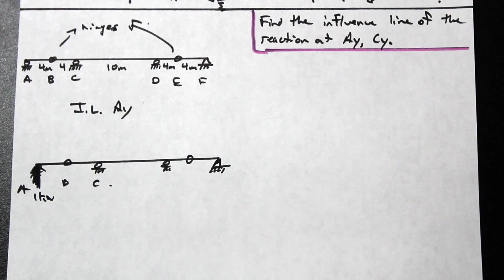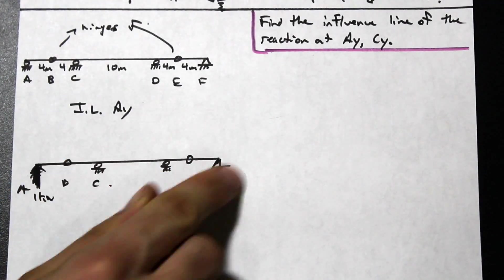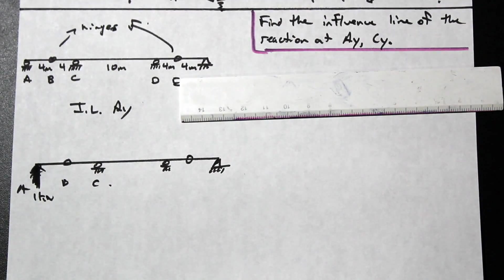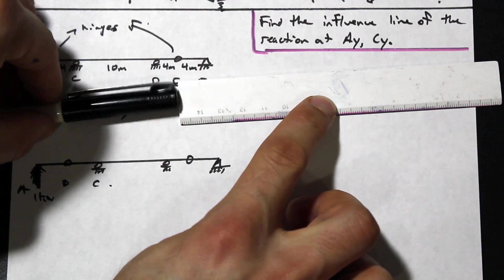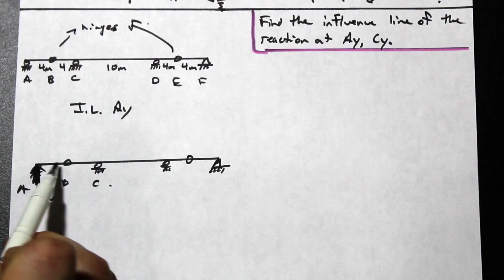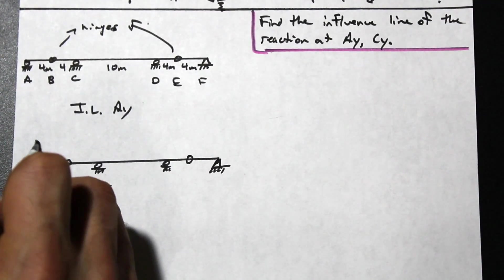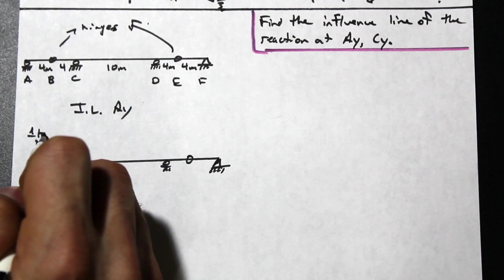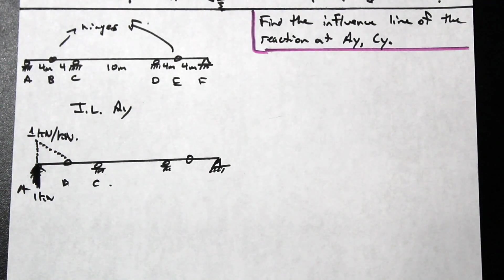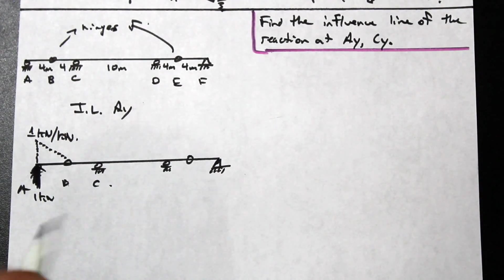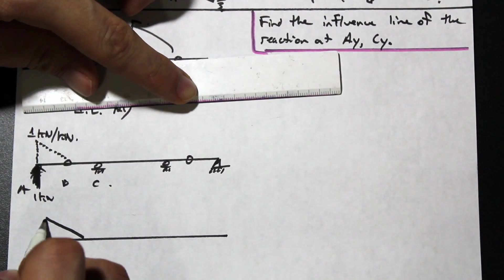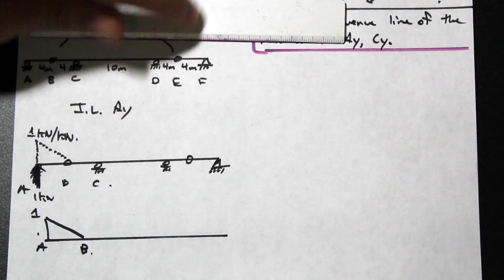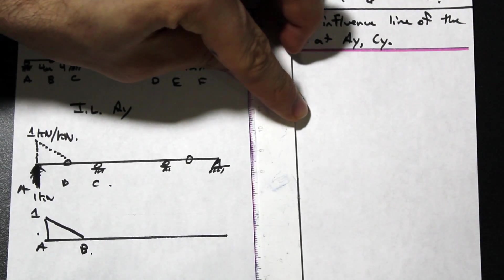Think about how an internal hinge works — it separates the AB portion of the beam from the rest. If we push up on the left side at A, it's not going to influence the rest of the beam because the internal hinge isolates AB from the remainder. So the deflected shape gives us one kilonewton per kilonewton at A, dropping to zero at B and staying zero beyond. The influence line for AY is simply a small triangle at the corner.